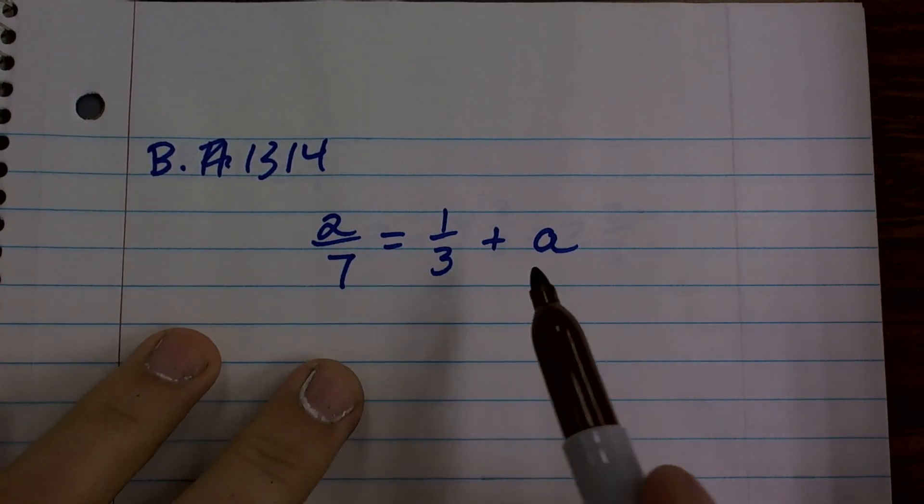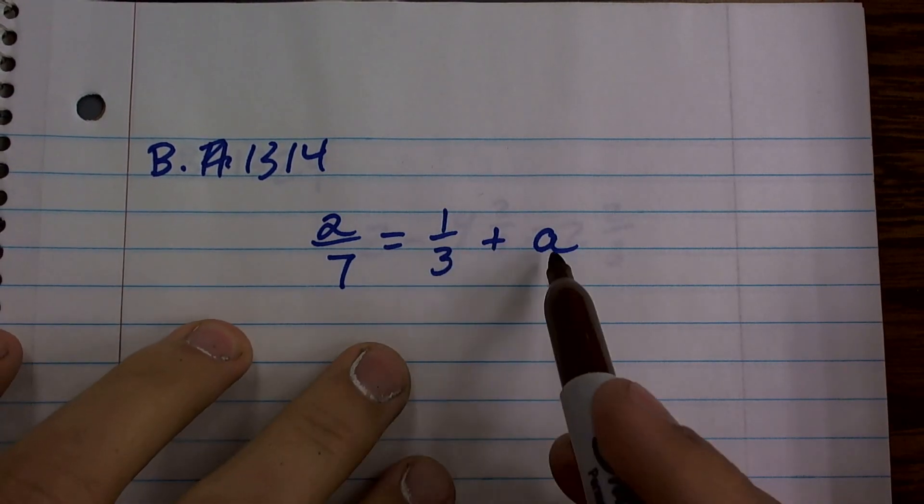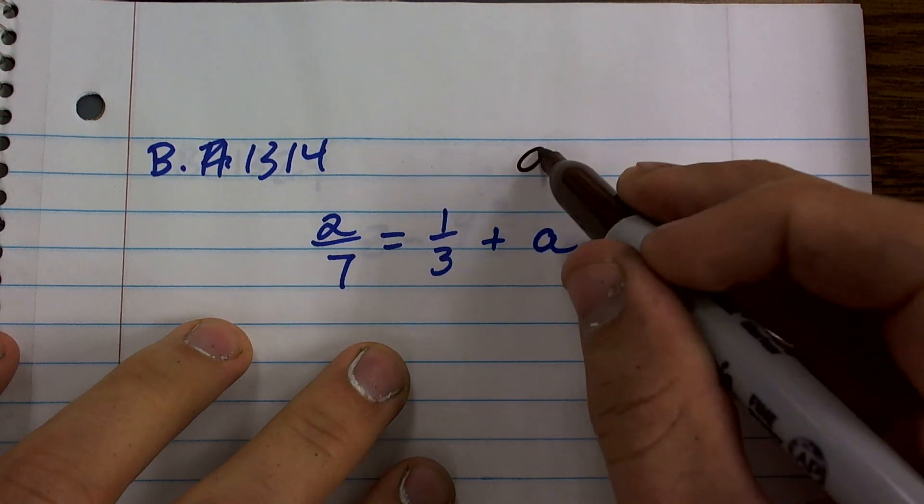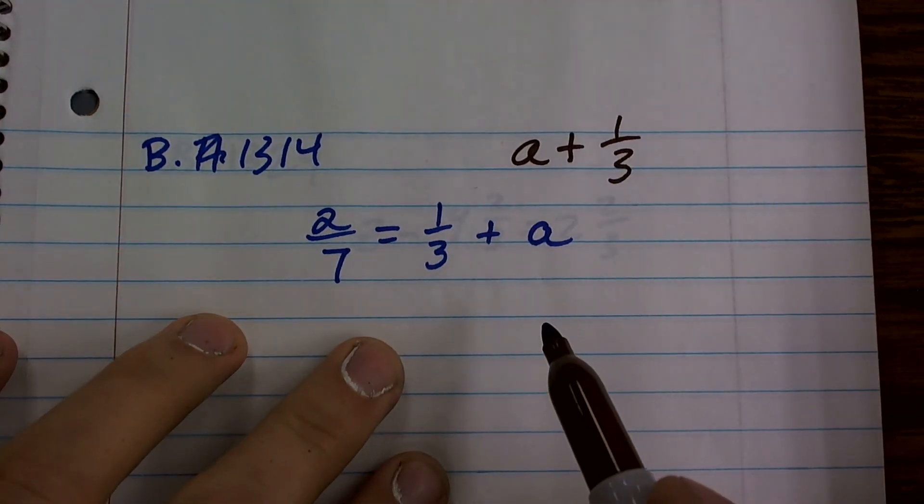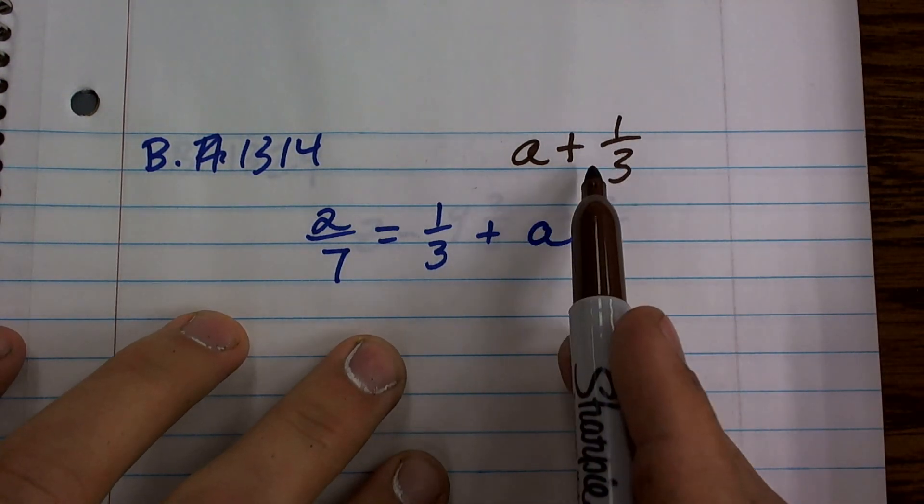So we need to look at this and say, what is exactly happening to the variable? You can see I'm adding the variable to the number as I read it, but it's important to understand that I can also rewrite this as a plus 1/3 by the commutative property of addition. So here, you can see that I'm adding 1/3.